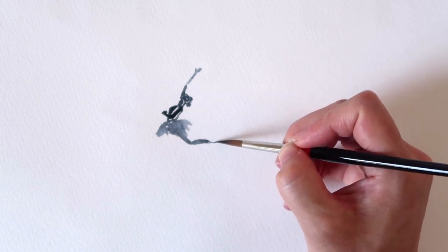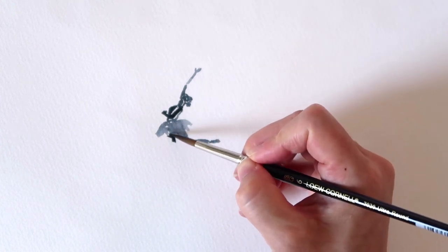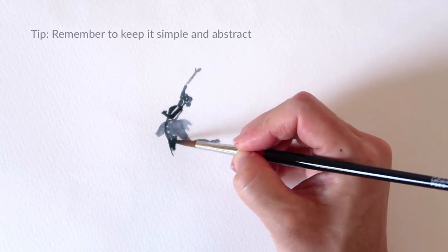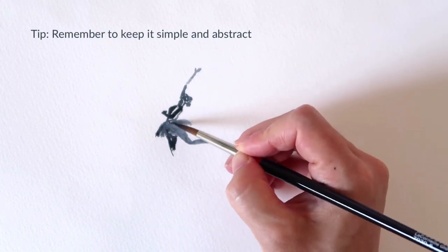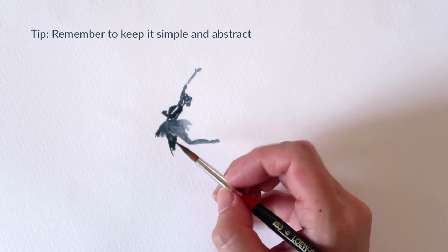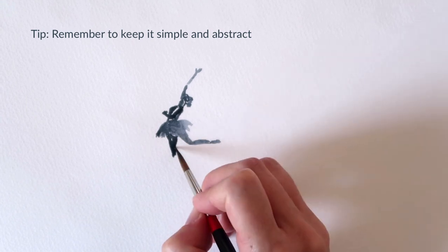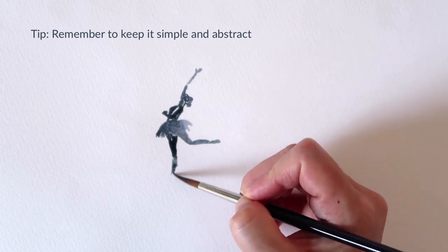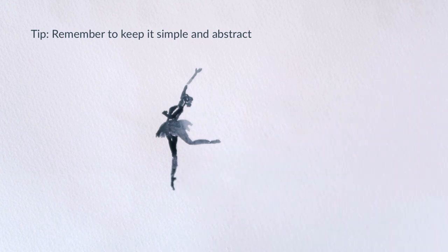And leaving those white gaps is going to suggest a lot more than you may think it would. So because these are really abstract and simple, we are relying on leaving gaps of white space in order to suggest movement, suggest break points, and suggest changes in texture, things like that.